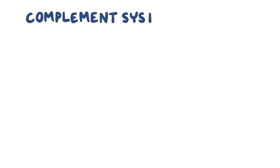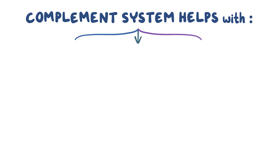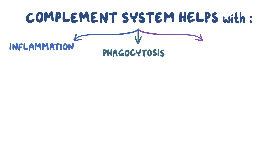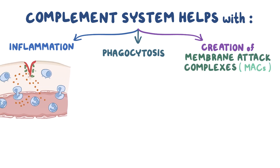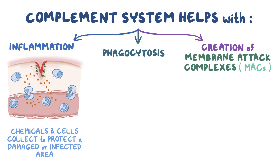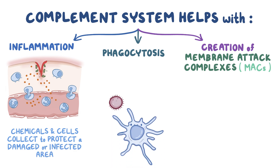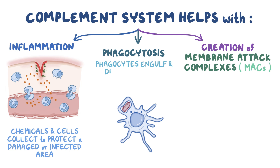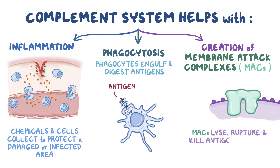The complement system helps with three important immune processes: inflammation, phagocytosis, and the creation of membrane attack complexes, or MACs. Inflammation is when chemicals in cells collect to protect a damaged or infected area. Phagocytosis is when certain white blood cells called phagocytes engulf and digest antigens, and membrane attack complexes are structures which dig into antigen surfaces and lyse, or rupture and kill them.